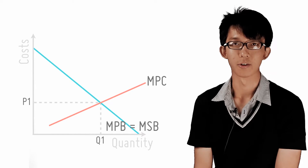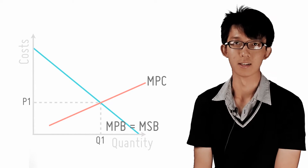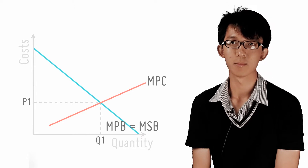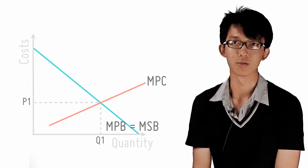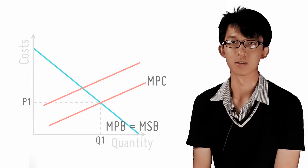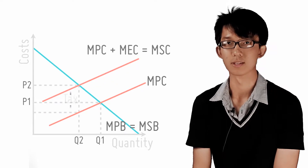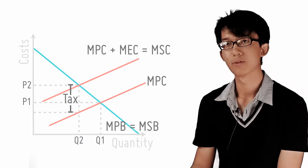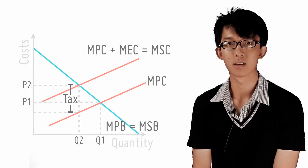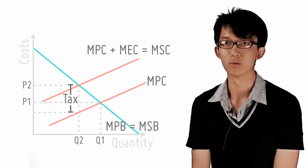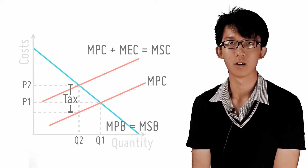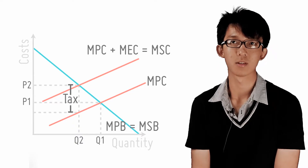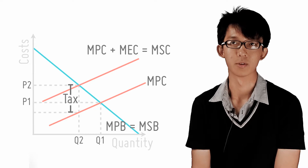Taxes can be used to correct for negative externalities. Basically, the aim of such taxes is to increase the private cost until it coincides with the social cost. As can be seen from the graph, before the tax, the MPC is lower than the MSC, resulting in a production beyond the socially optimal level.